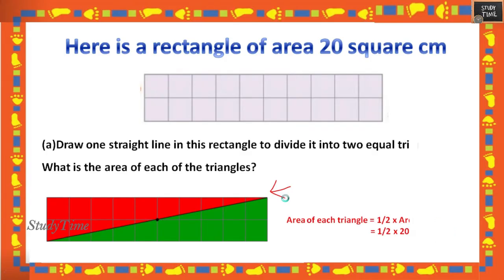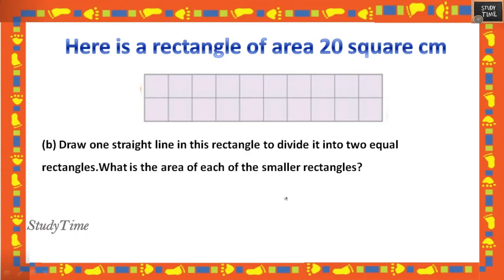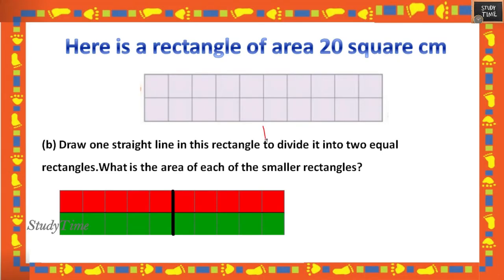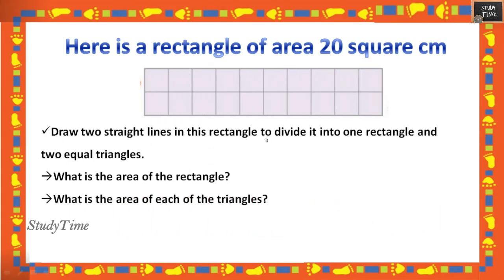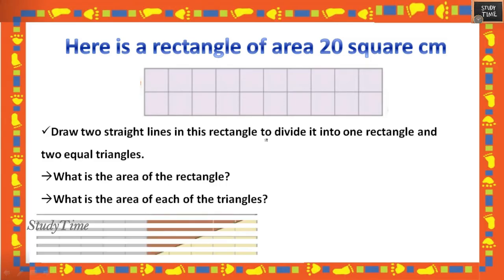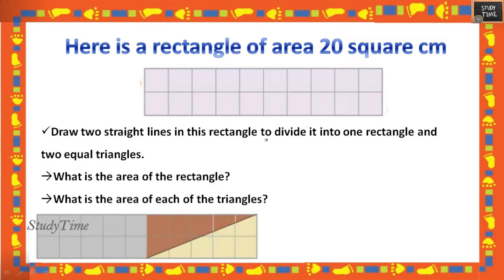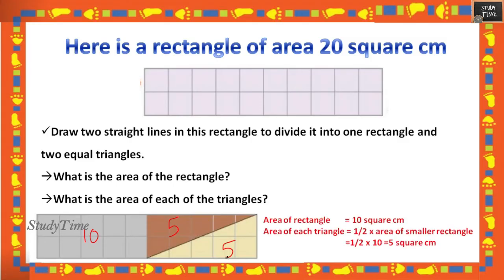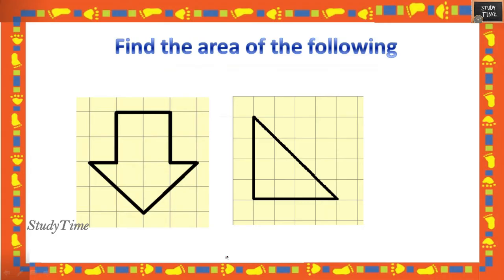Draw one line in a triangle to divide it into two equal rectangles. The triangle has 10 boxes, so draw a line in the middle — each smaller piece has area 5 square centimeters. Next: draw two straight lines in a rectangle to divide it into one rectangle and two equal triangles. The rectangle part has area 10, each triangle has area 5, and the total is 20 square centimeters.